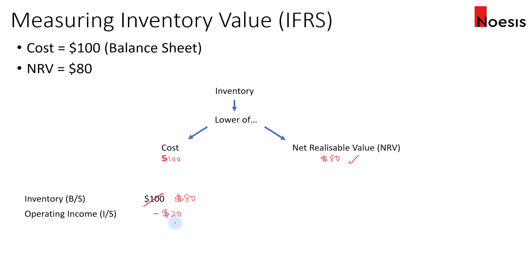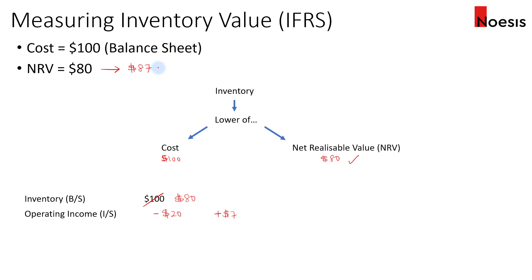In subsequent periods, when we reassess the NRV, if the value rises above $80 — say it goes up to $87 — there is a gain of $7. Since we originally recorded a write-down of $20, and $7 is still less than $20, we can recognize a $7 gain. That leaves another $13 available to reverse if the NRV increases further.